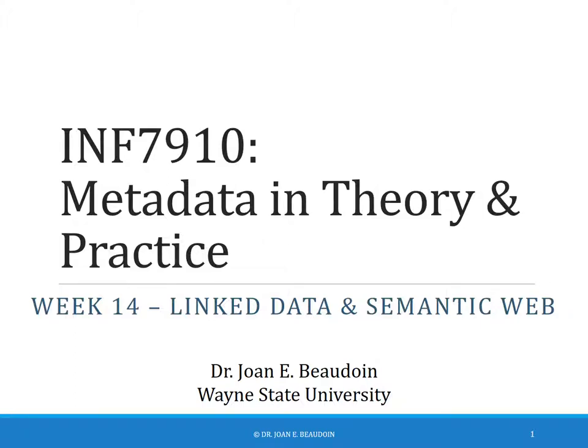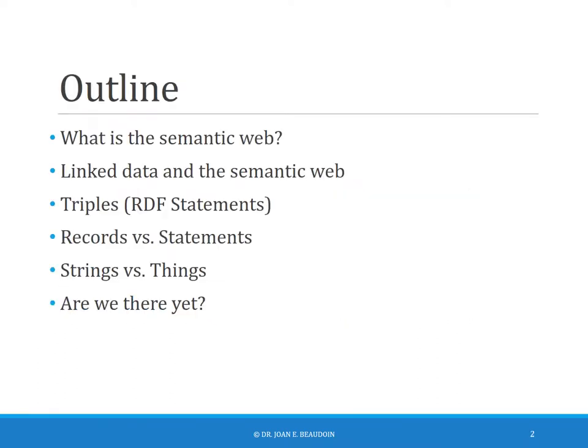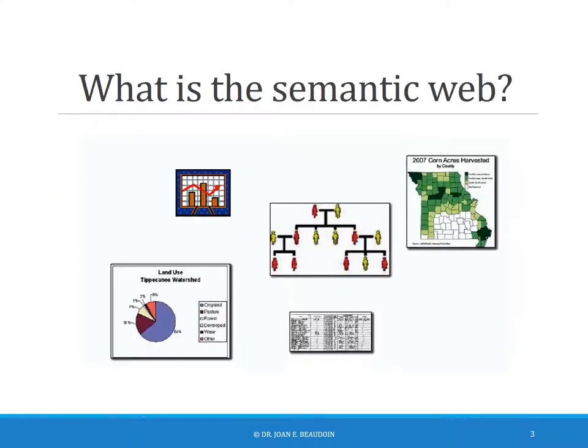Hello and welcome to week 14. This week we are looking at linked data and the semantic web. This is the outline of what we will cover. First we'll define what the semantic web is, then we'll look at linked data and the semantic web. Then we'll move on to a description of triples, otherwise known as RDF statements, then records and how they compare to statements, then strings versus things, and finally a discussion on are we actually there yet?